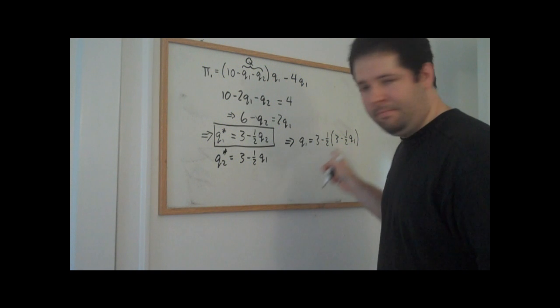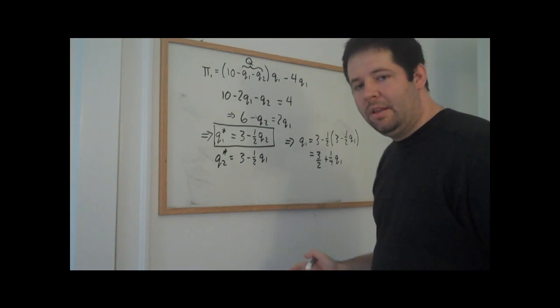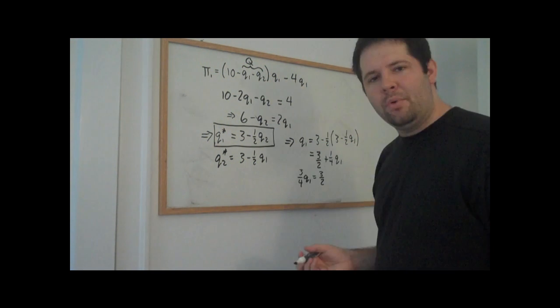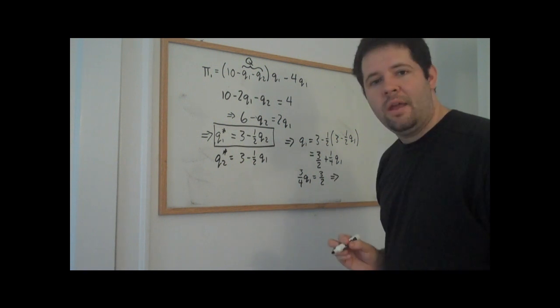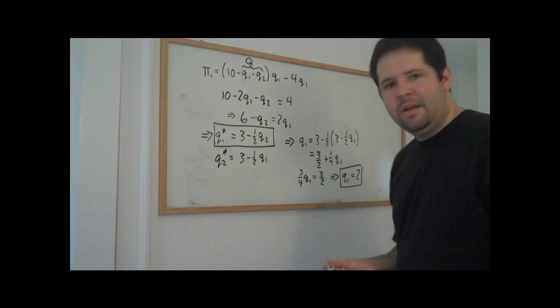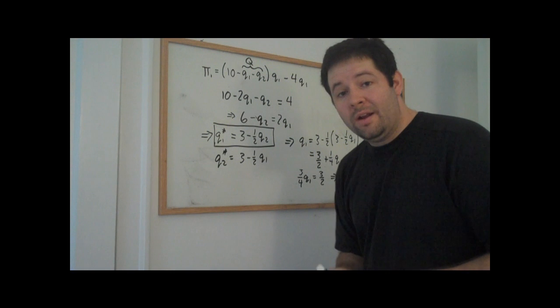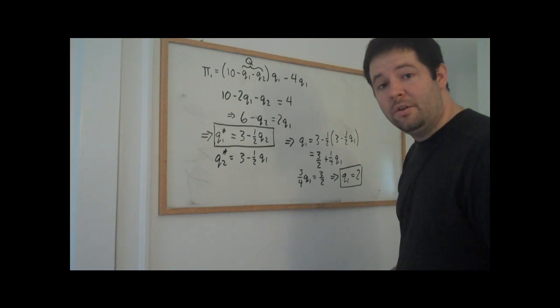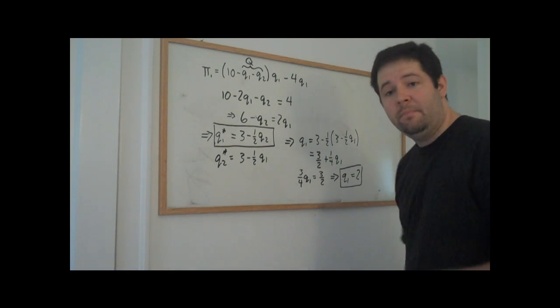I go ahead and substitute in, distribute and collect terms, bring the Q1's together, invert and multiply. And so what we see is that the quantity that these Cournot competitors produce is a quantity of two.